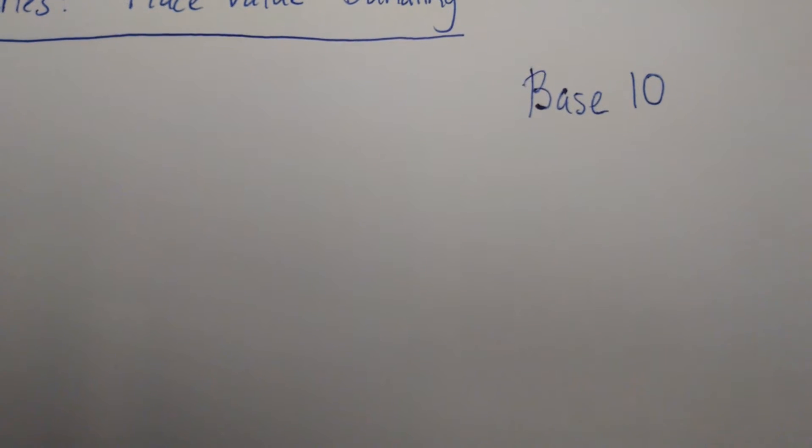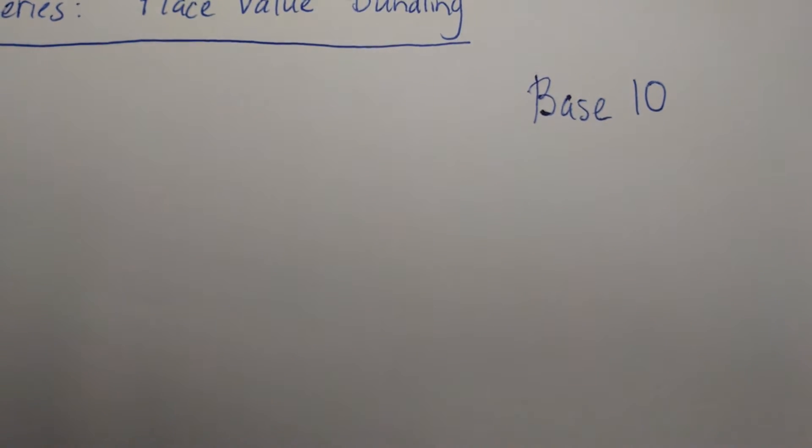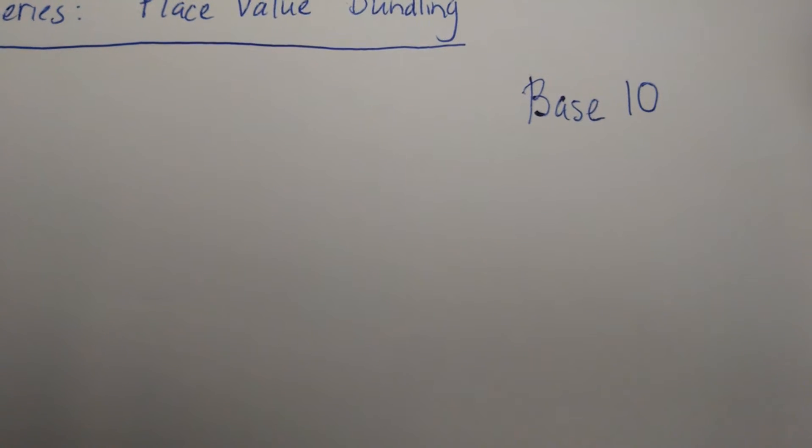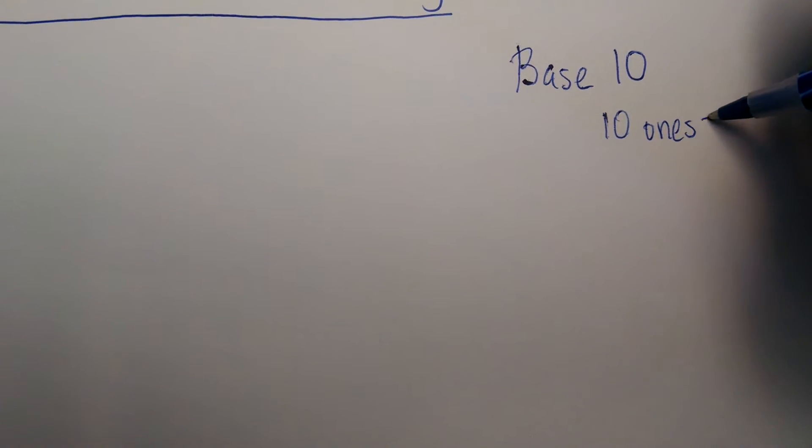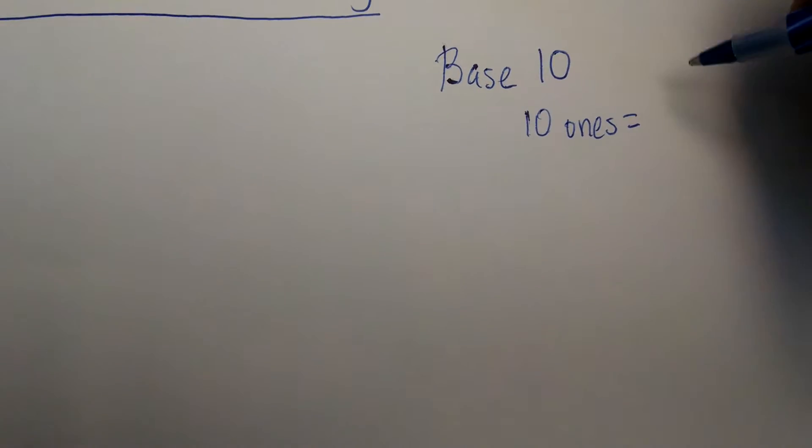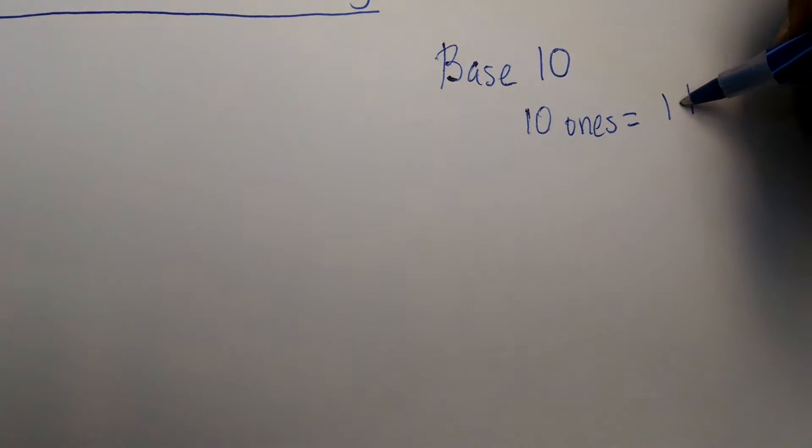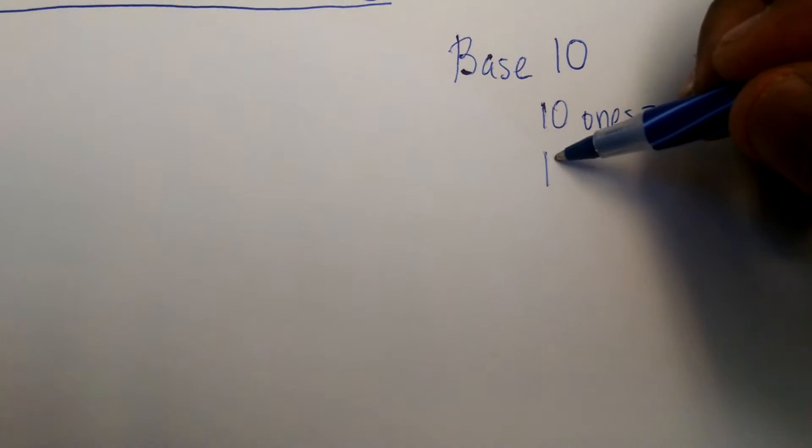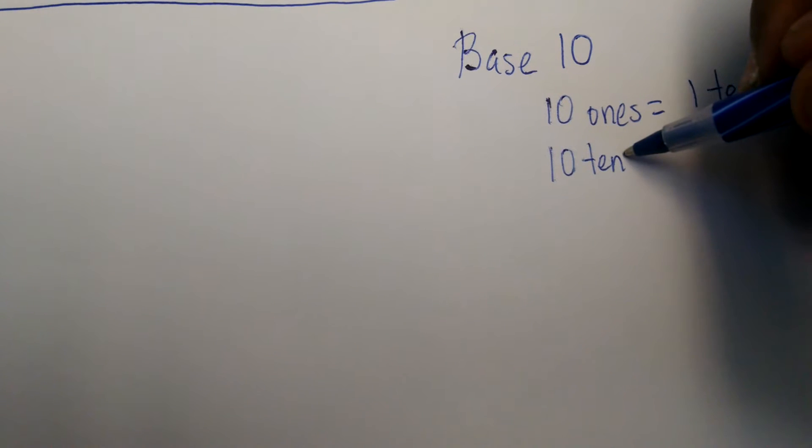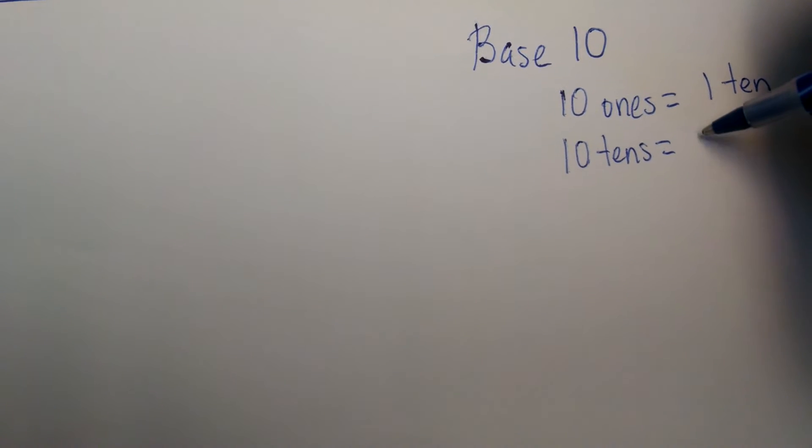So if you have 10 ones, think of ten one-dollar bills, that's equivalent to 1 ten. And if you count it by tens and you have 10 tens, that's equivalent to 1 hundred.